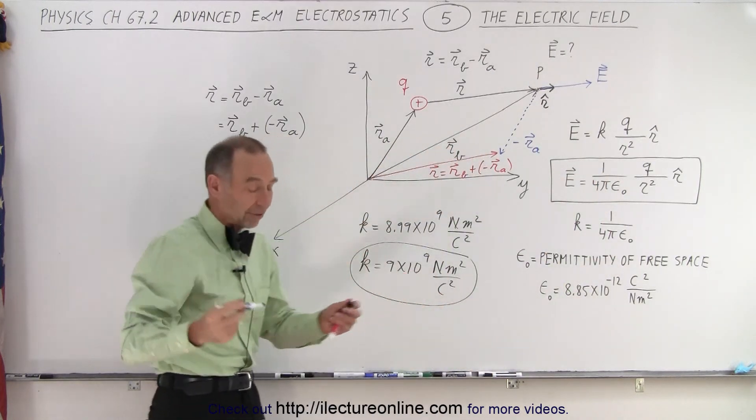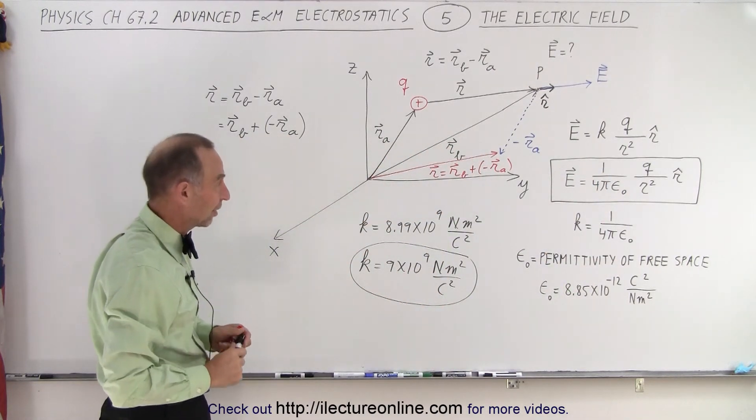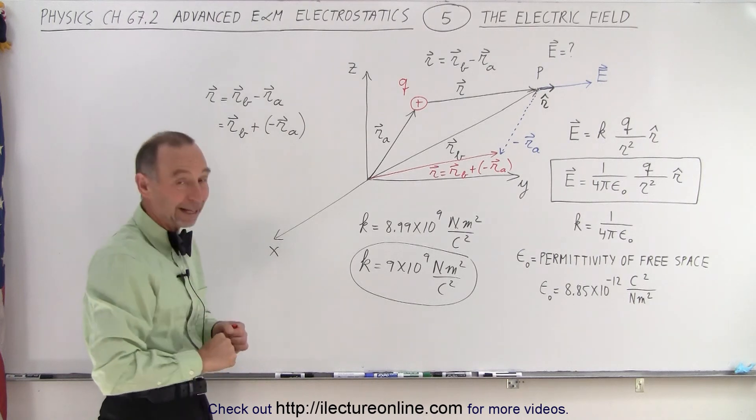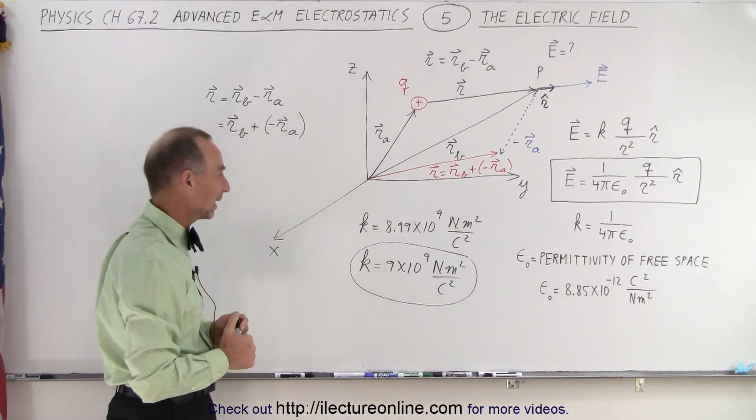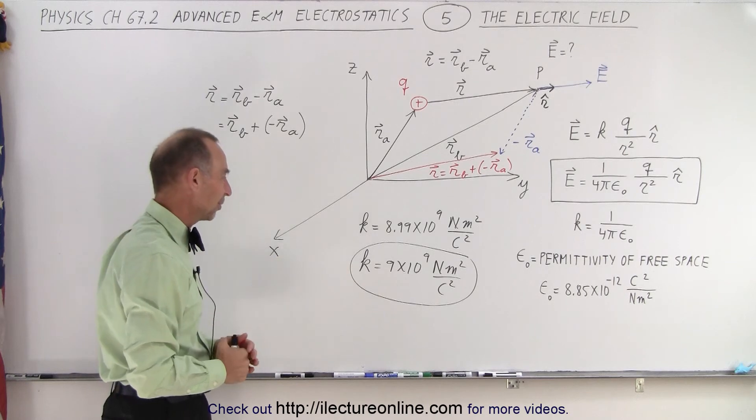But lots of books, authors, and even lots of professors end up using the 1 over 4 pi epsilon sub not. I just don't know why they like that better. This is so much simpler I think.